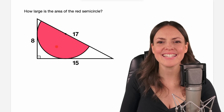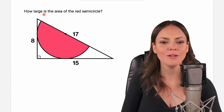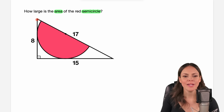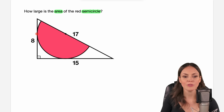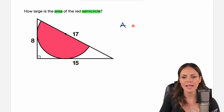Hello my lovelies, it's Susanna, and today I want to show you how to solve this problem where we have to find out how large the area of the red semicircle is. We have this big triangle here. We are given the lengths of the sides of this triangle, and that it is a right triangle. Inside it we have this semicircle, and the semicircle touches the triangle at two points. We have to find the area of the semicircle, so I call this area A.